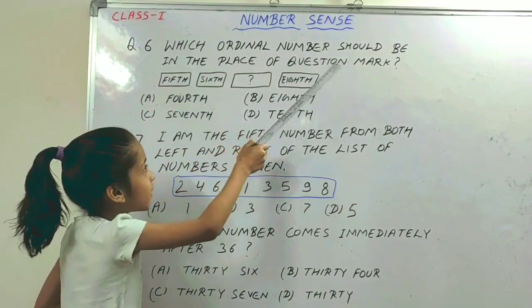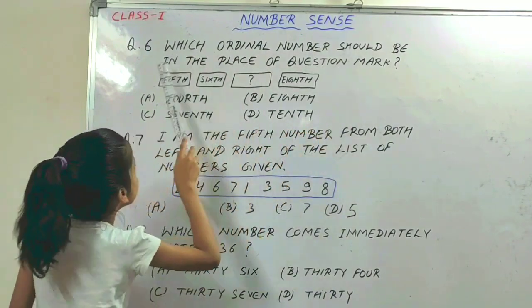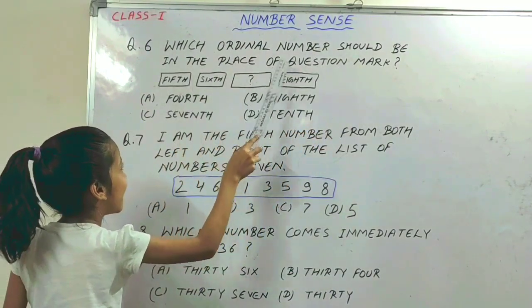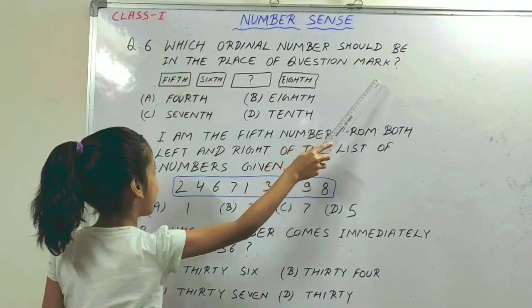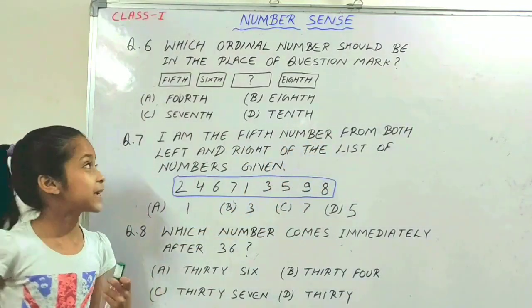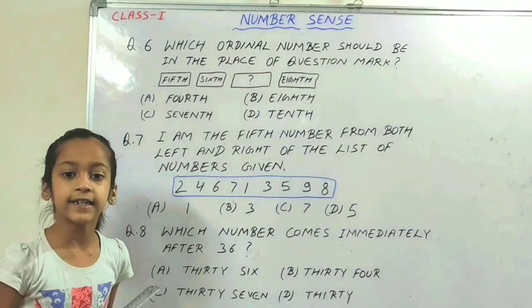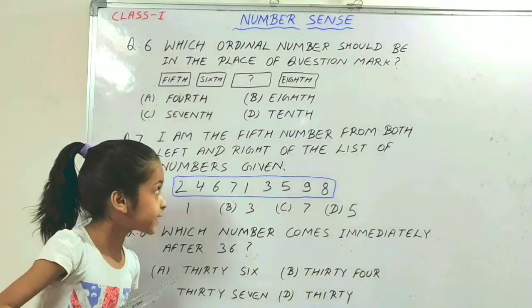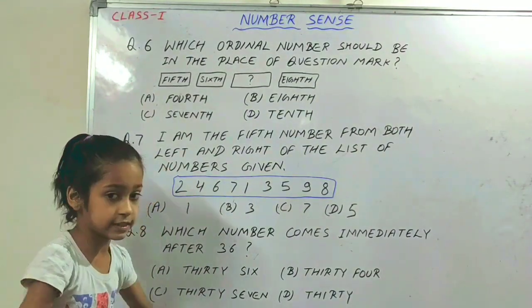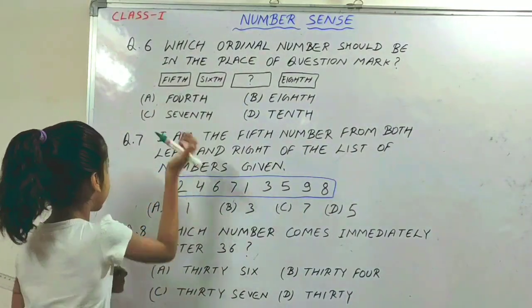The next question is: which ordinal number should be in the place of the question mark? Between 6th and 8th, 7th comes. So the answer is C, 7th.